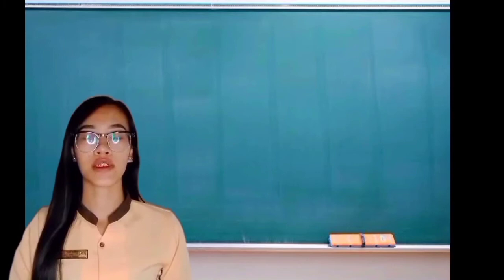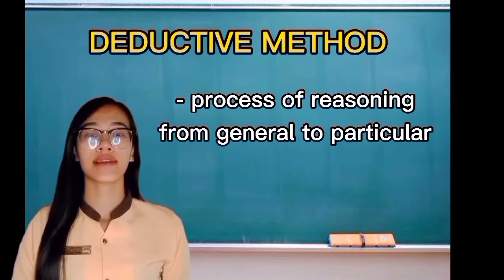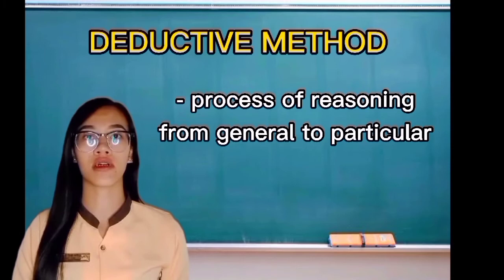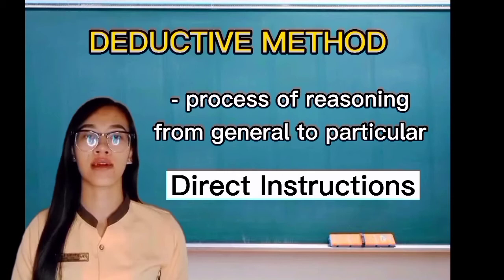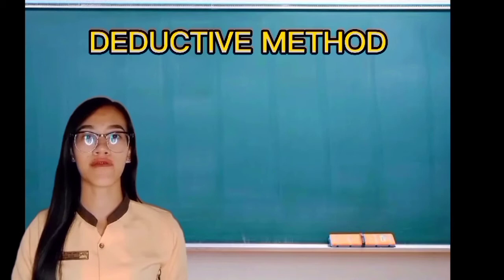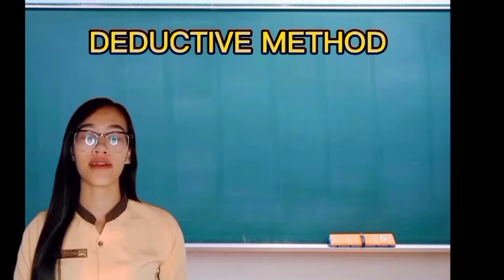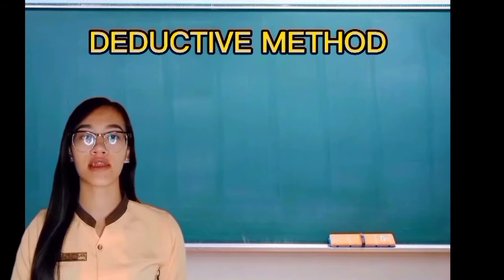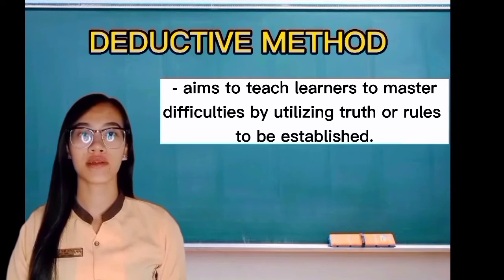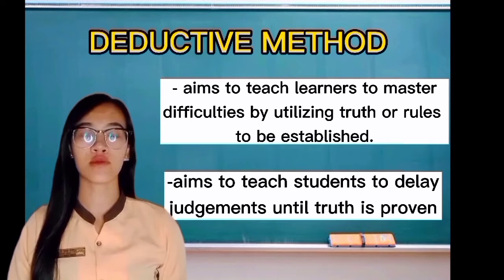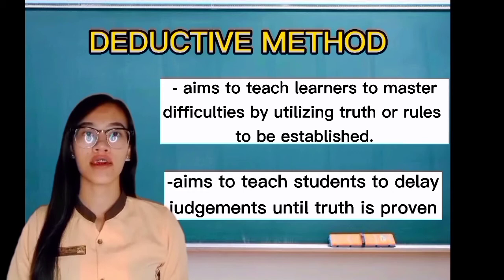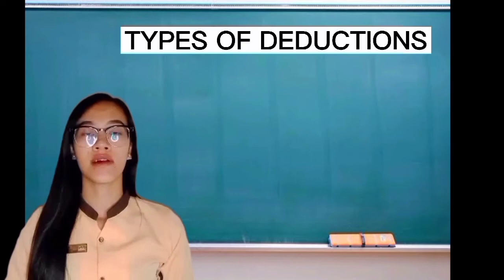Another type of time-tested method is the deductive method. Deductive method is the process of reasoning from the general to the particular. It is also called direct instruction and is the reverse of the inductive method. In the inductive way, specific cases are studied and a generalization is arrived at. In the deductive way, the lesson starts with a generalization and it is tested or applied in specific cases. Deductive method aims to teach learners to master difficulties by utilizing established rules and to delay judgment until truth is proven.